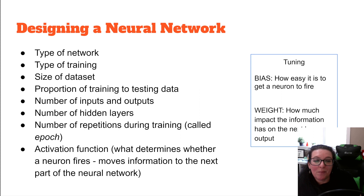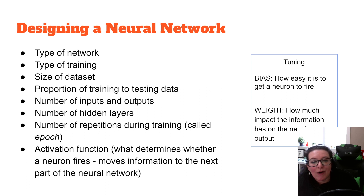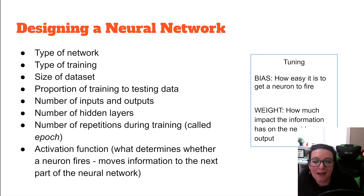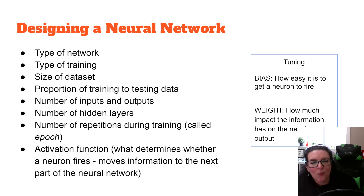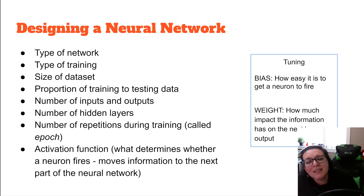We need to decide on the number of inputs — our input is time. We need to decide on our output — the stock price. We need to decide how many hidden layers there will be. We also need to decide on the number of repetitions during training. With recurrent neural networks, you can go back and update information in the hidden layers, but RNNs still go back through the entire model. So we have epochs — the number of repetitions through our training data. The more epochs, the more our model can learn from how well the previous model worked.